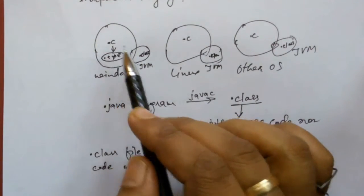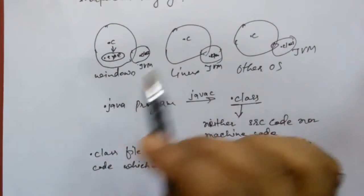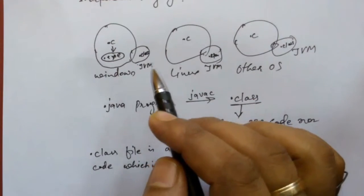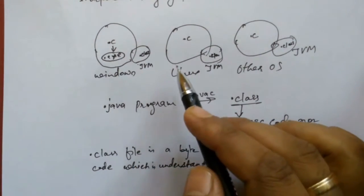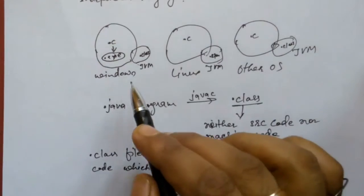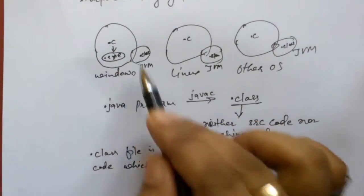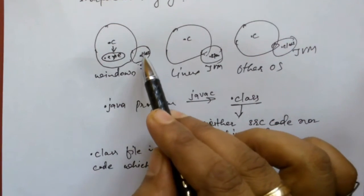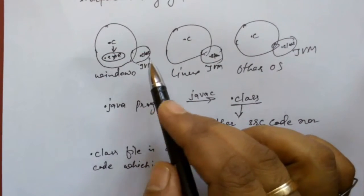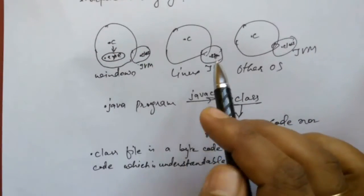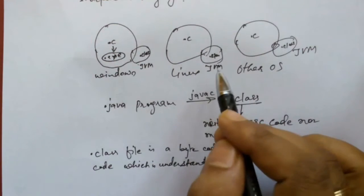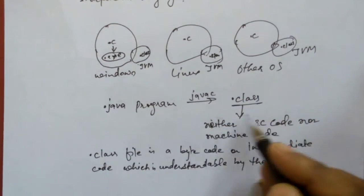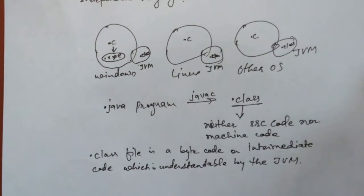We can say C is a portable language because the source code can be transferred from one environment to another. But a Java program is both portable as well as platform independent — portable because the Java source code can be transferred from one operating system to another and recompiled and executed, and the .class bytecode can also be transferred from one environment to another and executed by the JVM available on that operating system. So the JVM and bytecode together make Java a platform independent language.